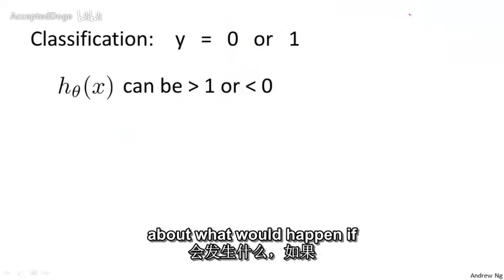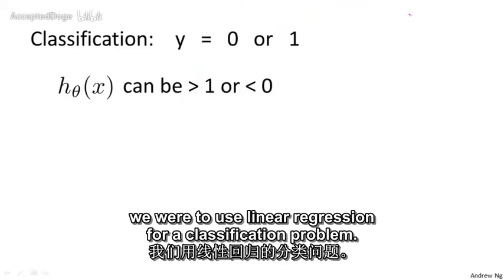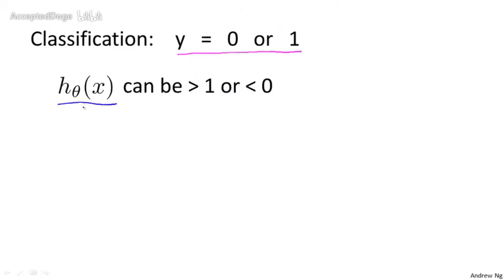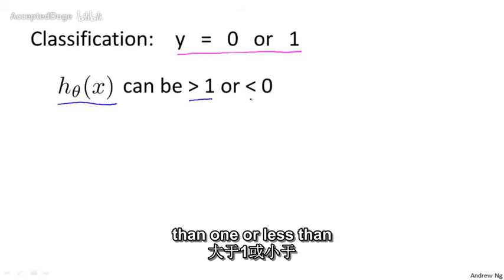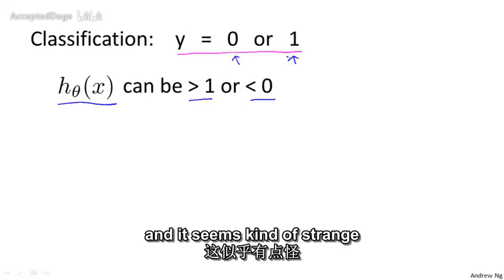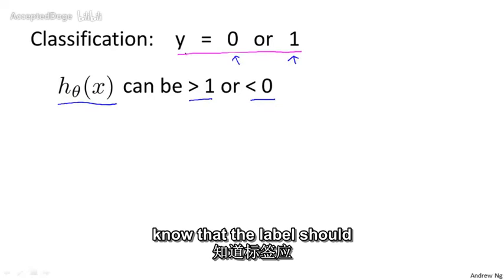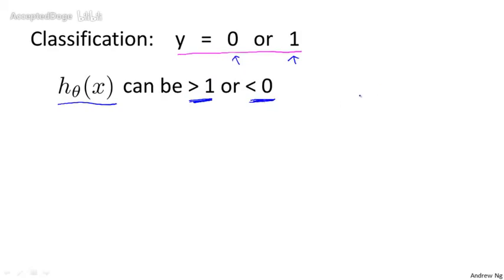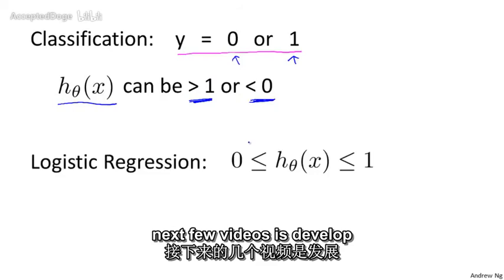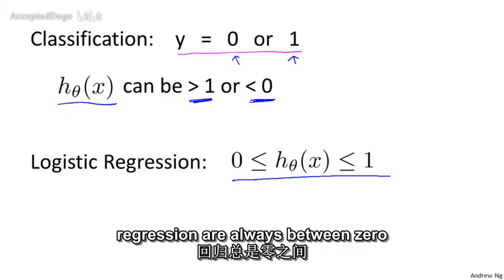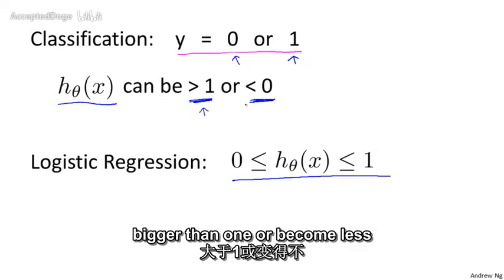Here's one other funny thing about what would happen if we were to use linear regression for a classification problem. For classification, we know that y is either zero or one, but if you are using linear regression, the hypothesis can output values that are much larger than one or less than zero, even if all of your training examples have labels y equals zero or one. And it seems kind of strange that even though we know the labels should be zero or one, the algorithm can output values much larger than one or much smaller than zero.